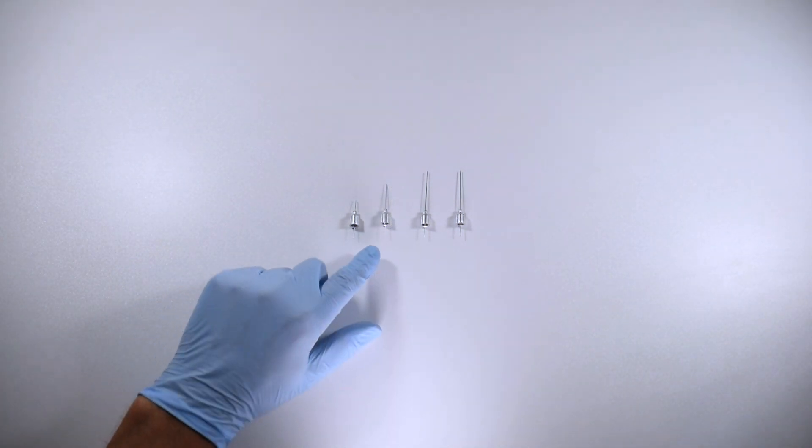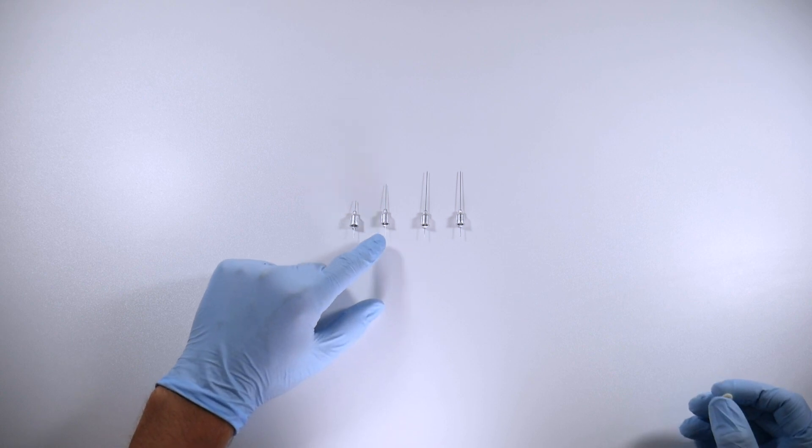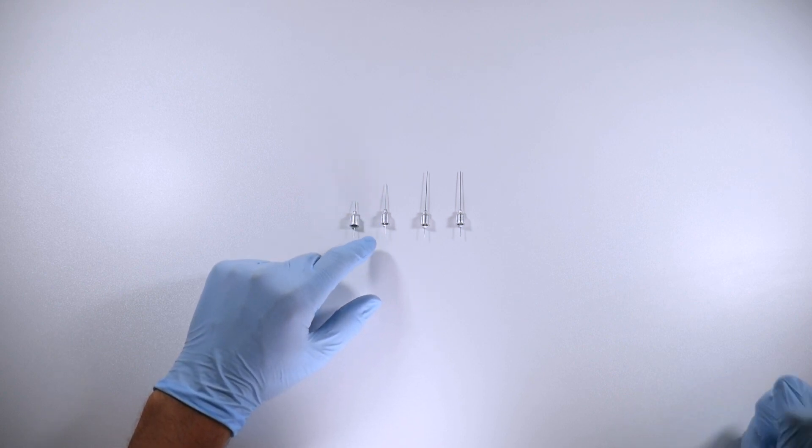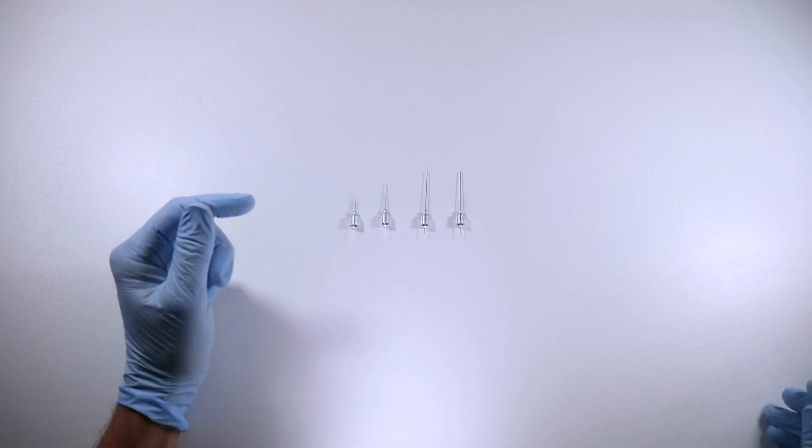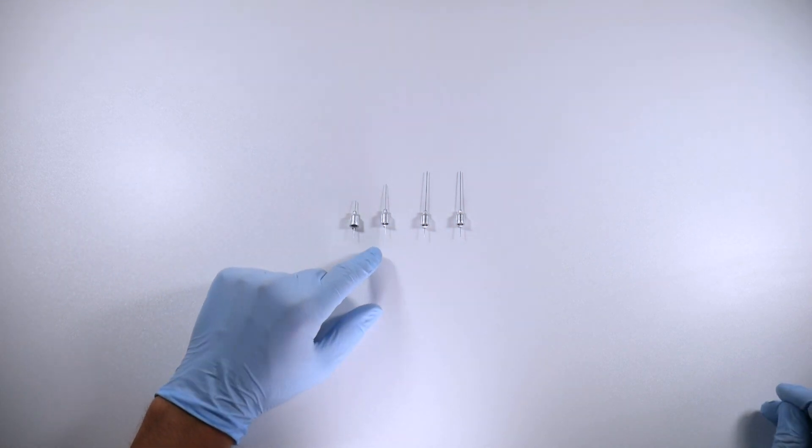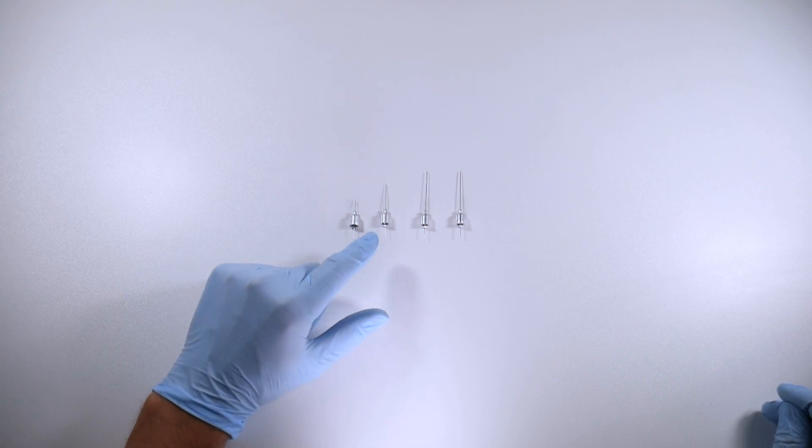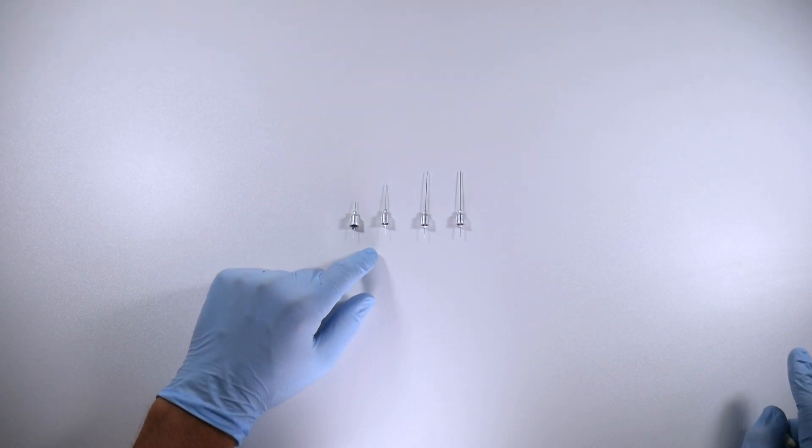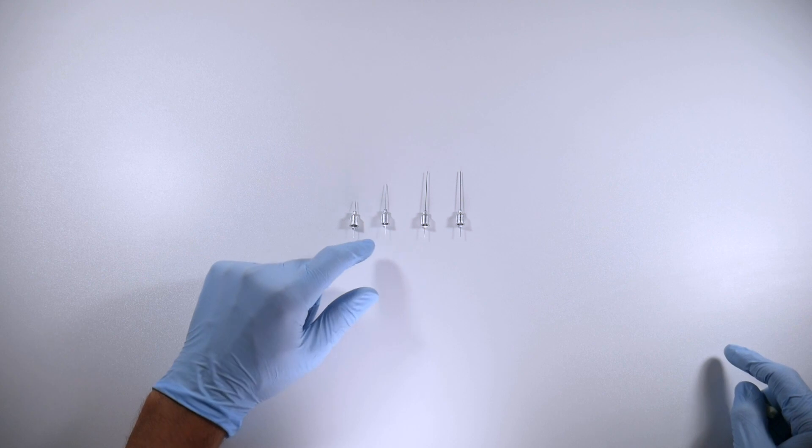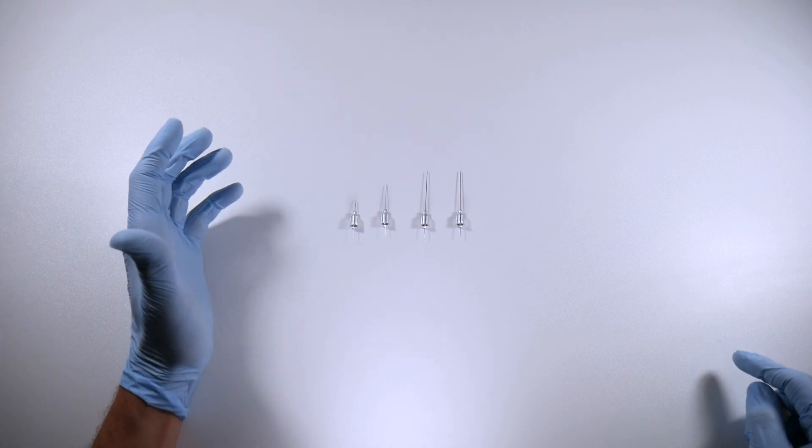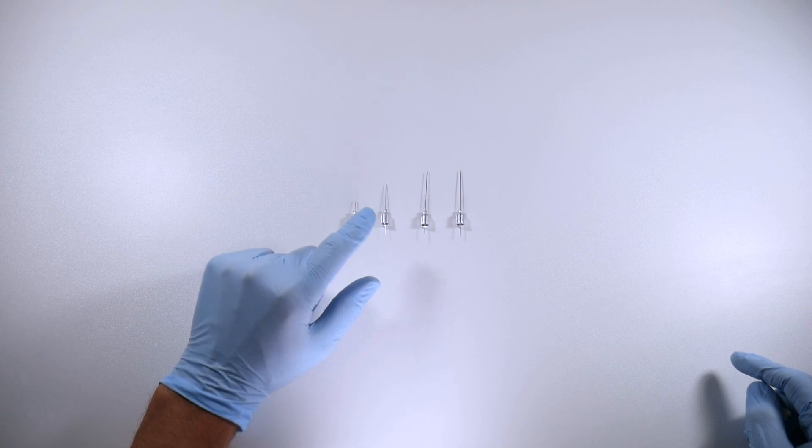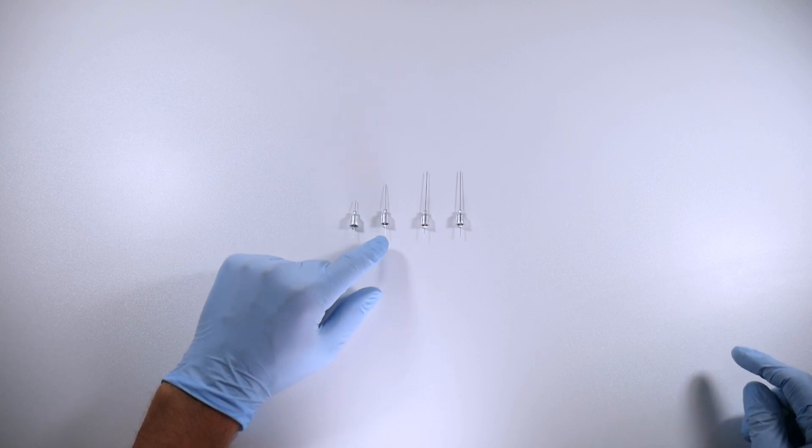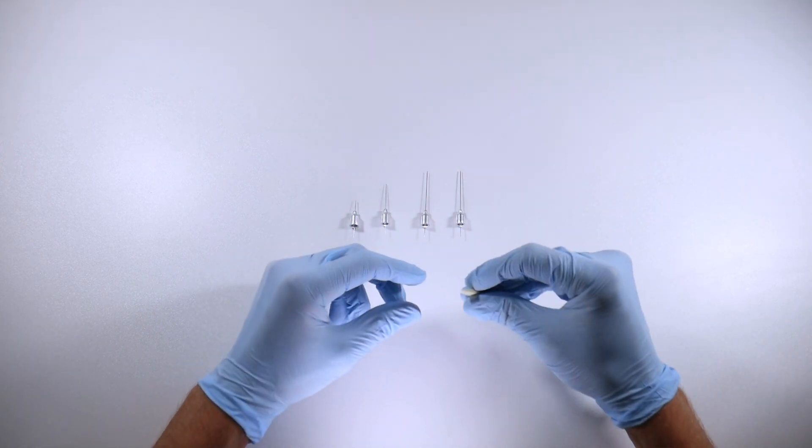The 30 gauge short needle, which is this guy right here, is arguably one of the most used needles in dentistry. A lot of dentists will use these because we're doing infiltrations a lot of the time and you don't need a lot of tissue penetration to get the anesthetic where you need it to go. There will also be dentists who will use this for their blocks and pretty much anything, so really it's a personal preference.